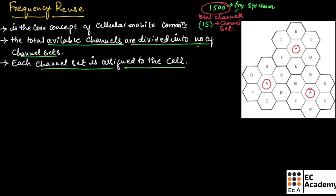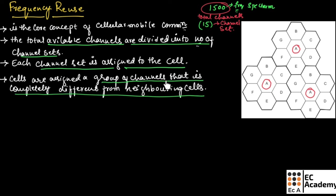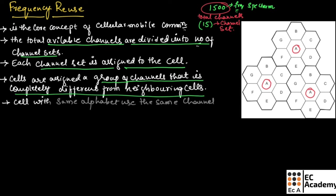In the same way, cells named B, C, and so on — cells with the same name can use the same channel set. The cells are assigned a group of channels that is completely different from neighboring cells. Cell A will receive a different set of channels compared to cell D, and each cell in the cluster receives a different channel set. Cells with the same alphabet use the same channel set.